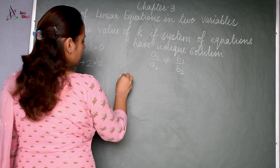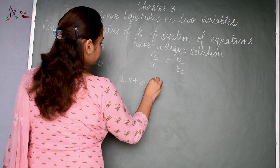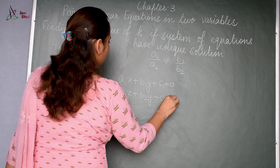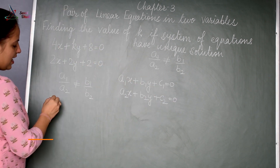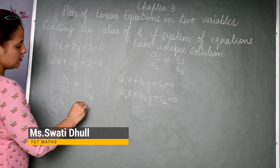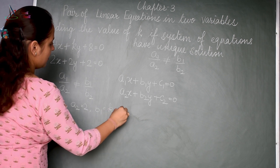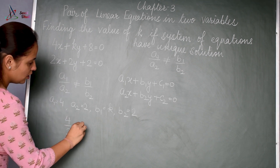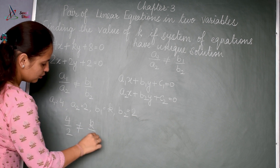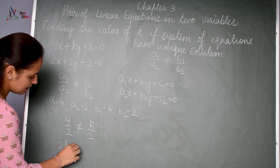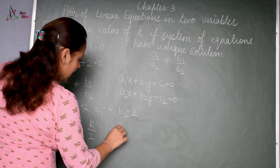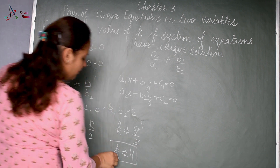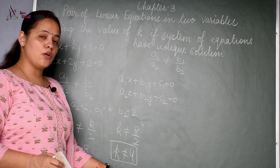Comparing with the standard form a1x + b1y + c1 = 0, we have a1 as 4, a2 as 2, b1 as k, and b2 as 2. Substituting into the condition: 4 by 2 is not equal to k by 2. Cross-multiplying: 2k is not equal to 8, which means k is not equal to 4.